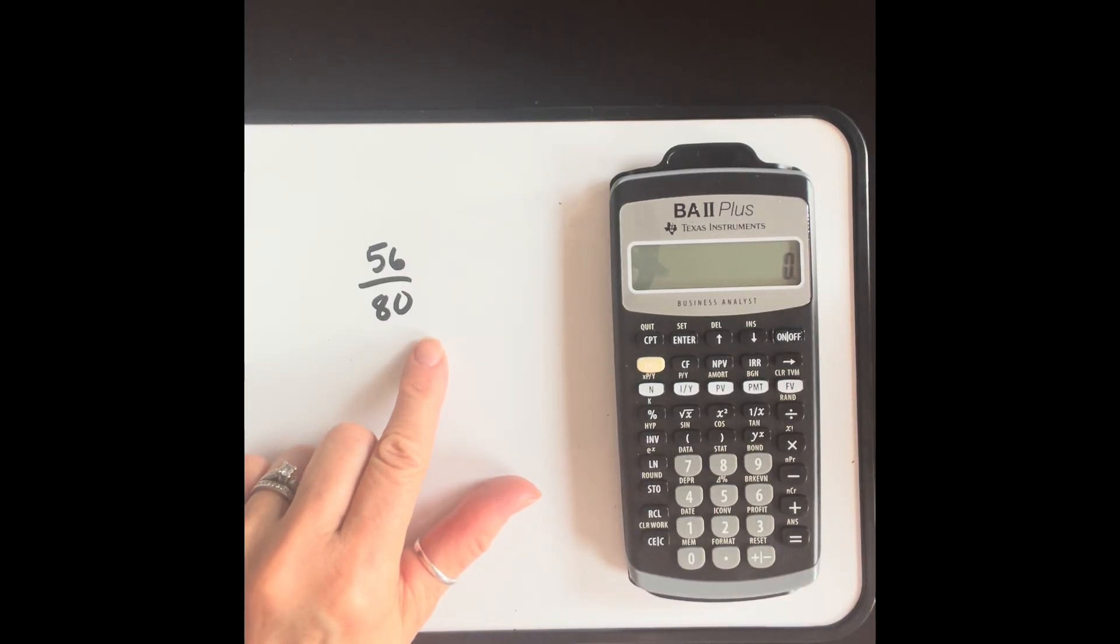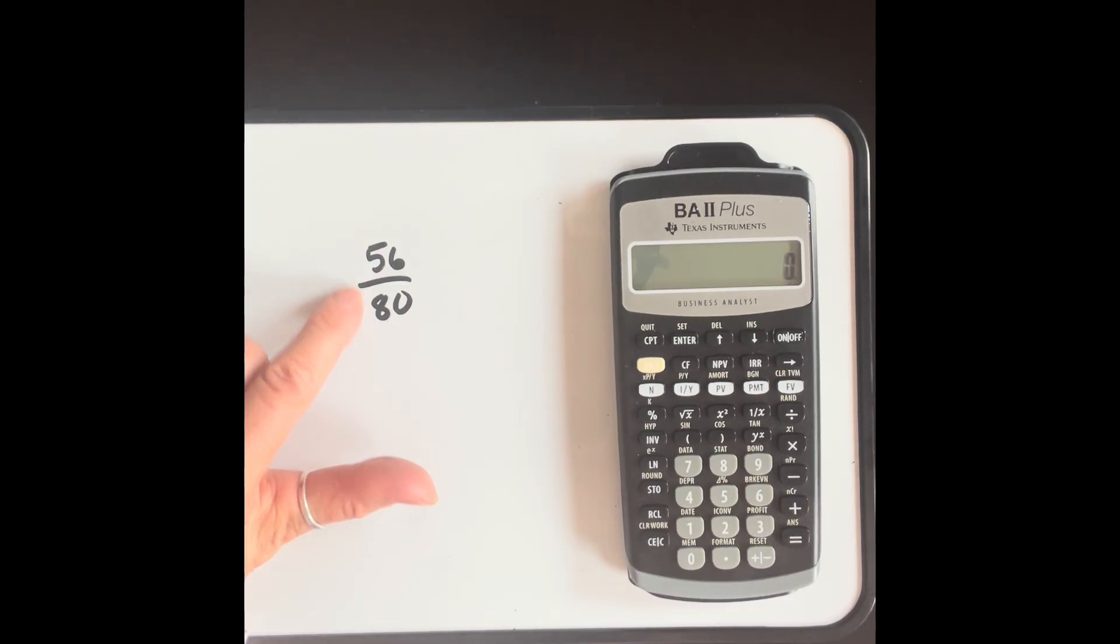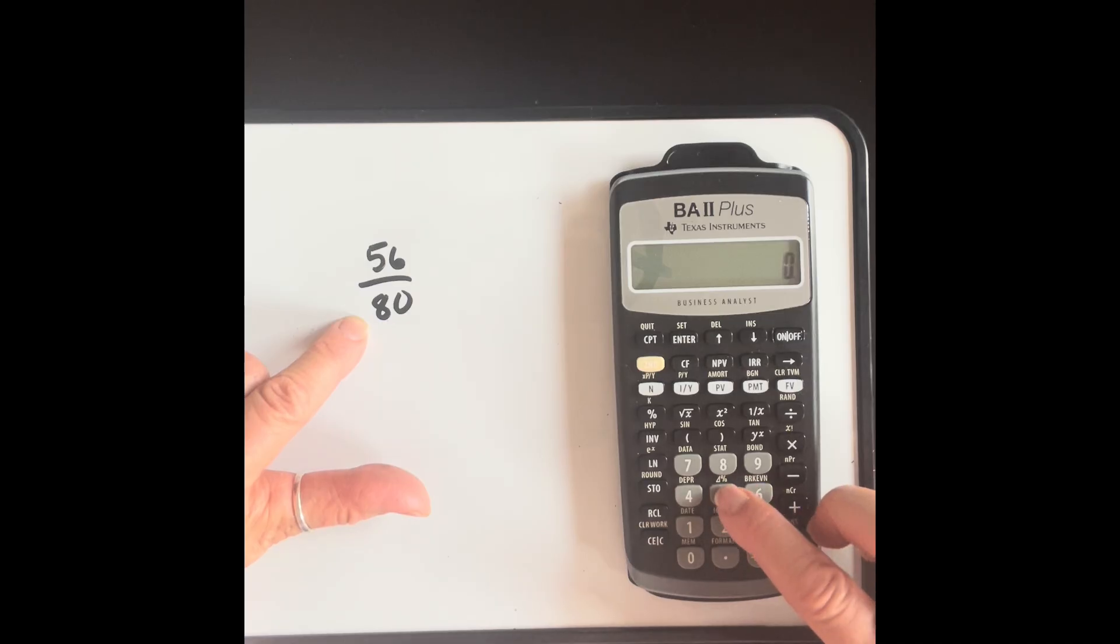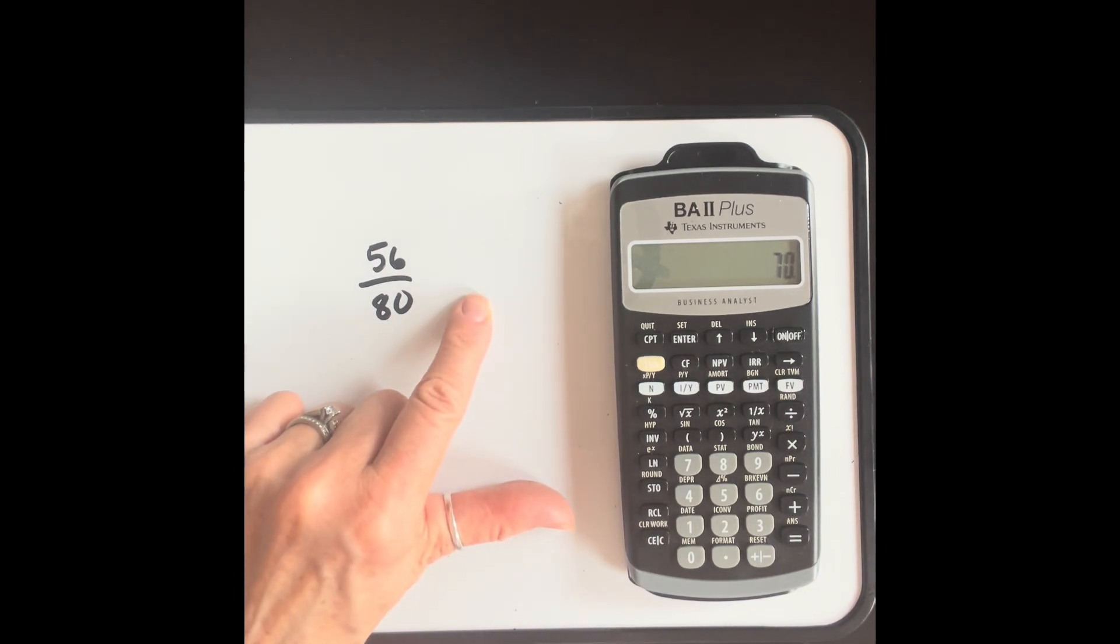Another way that you can use the percent key is to change a ratio or fraction to a percent. Let's say you've got 56 out of 80 on an exam, and you want to know what percent that is. So in order to do that, you just go 56 divided by 80% equals. So that would be equal to 70%.